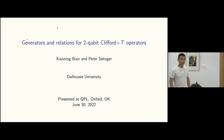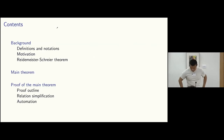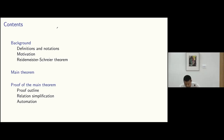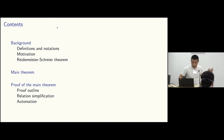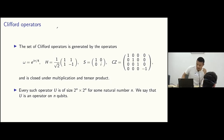My name is Xiaoning Bian. I'm a PhD student under Peter Selinger. Today I'll talk about generators and relations for two-qubit Clifford+T circuits. It's joint work with my supervisor Peter Selinger. The set of Clifford operators is generated by the scalar, the Hadamard H, the phase S, and the control Z — closed under tensor and multiplication. Every such operator is of size 2^n by 2^n. The Clifford operators are finite, so not universal — so we add a T gate, where ω is the eighth root of unity. The resulting operators are universal, and we call them Clifford+T operators.